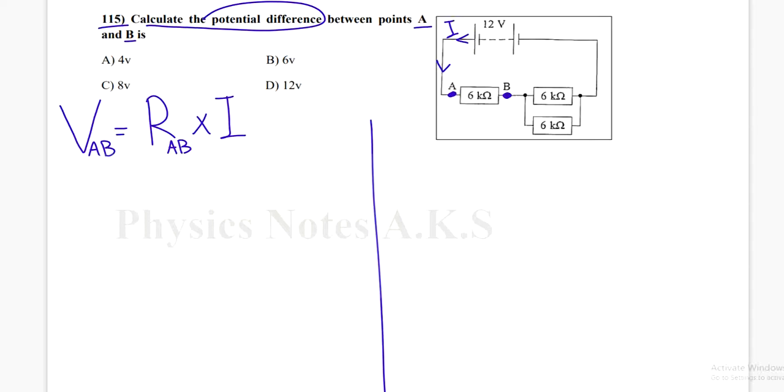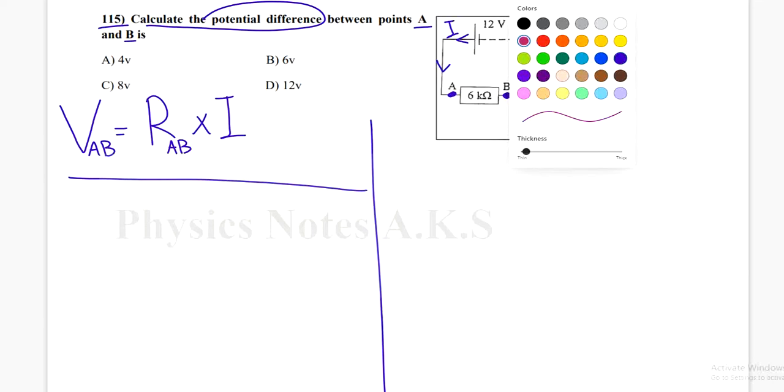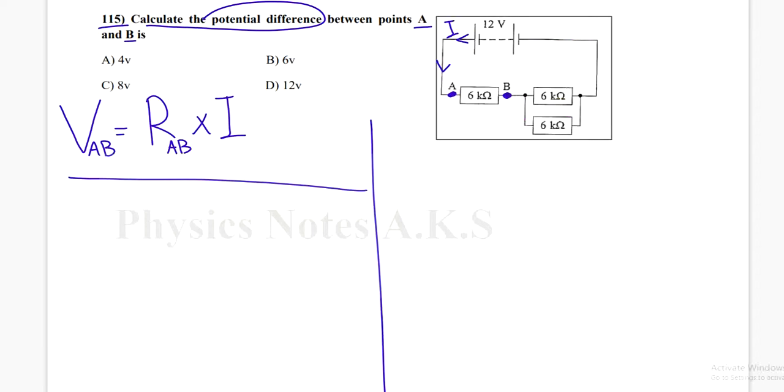So let's find I. I need the current. The current, the total current in the circuit will be given from electromotor force of the battery over the total resistance. The total resistance.